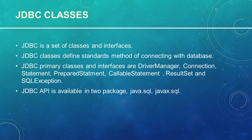In this slide, I will give an overview of JDBC classes. JDBC is a set of classes and interfaces that define a standard method of connecting with the database. JDBC's primary classes and interfaces are: driver, connection, statement, prepared statement, callable statement, result set, and SQL exceptions. JDBC API is available in two packages: java.sql (core API) and javax.sql (optional package).